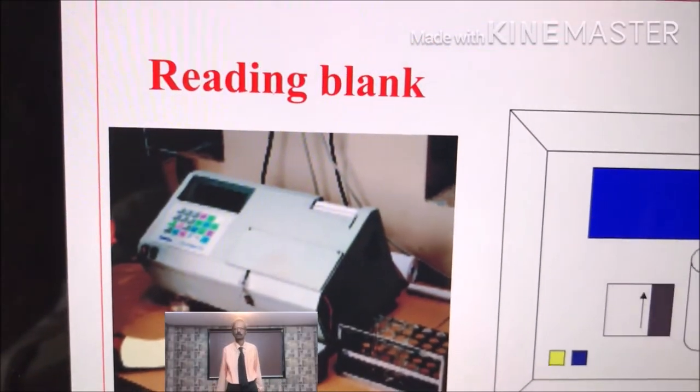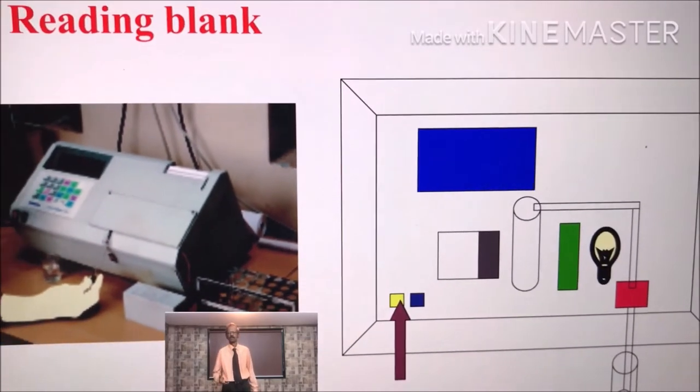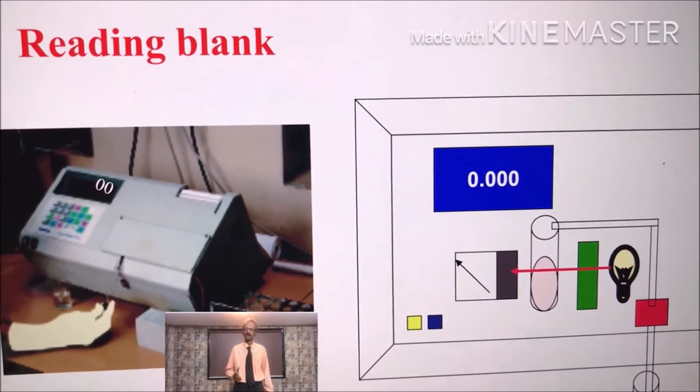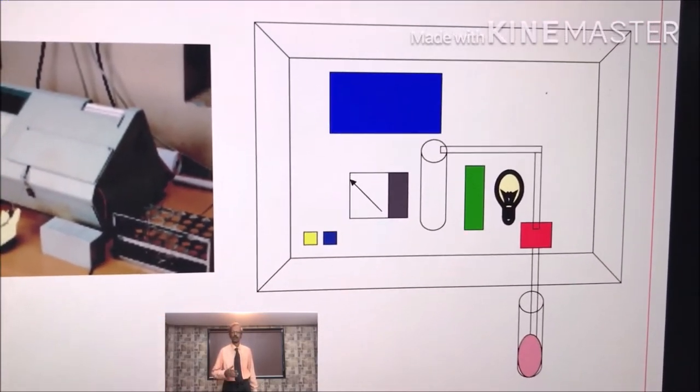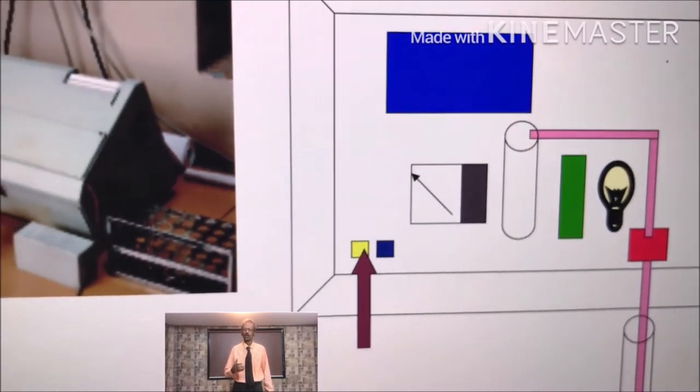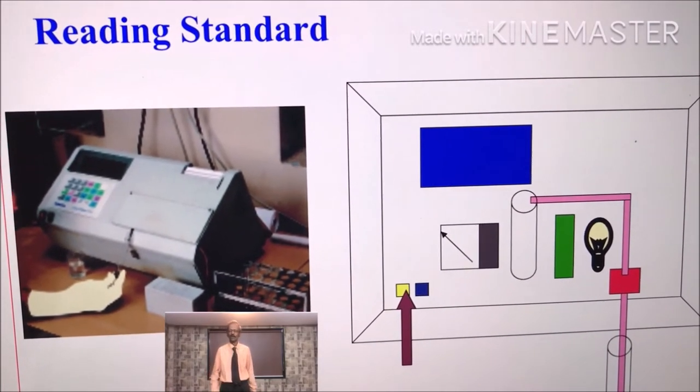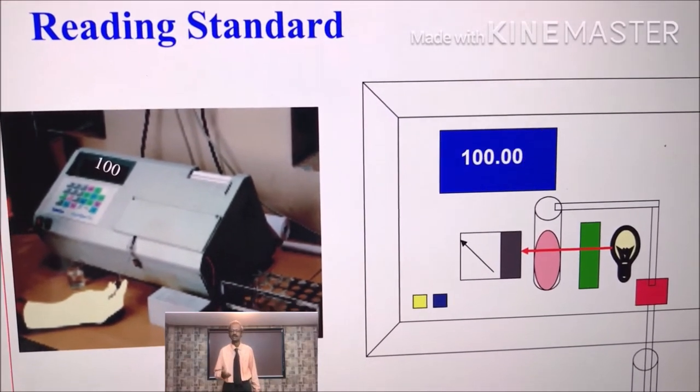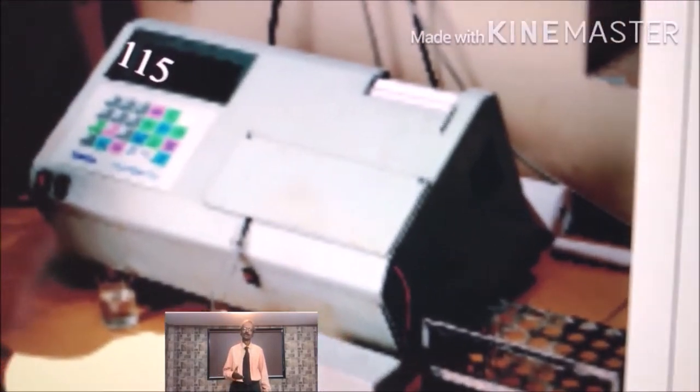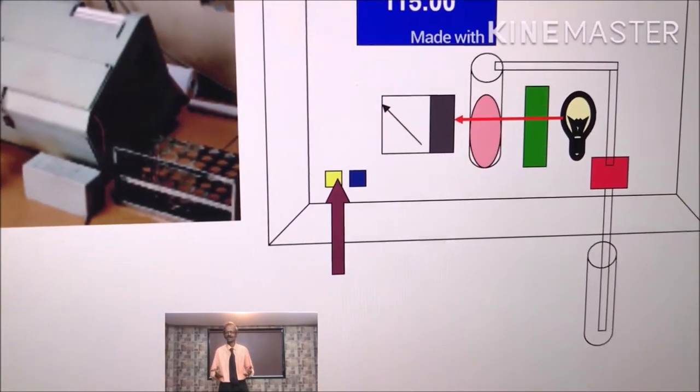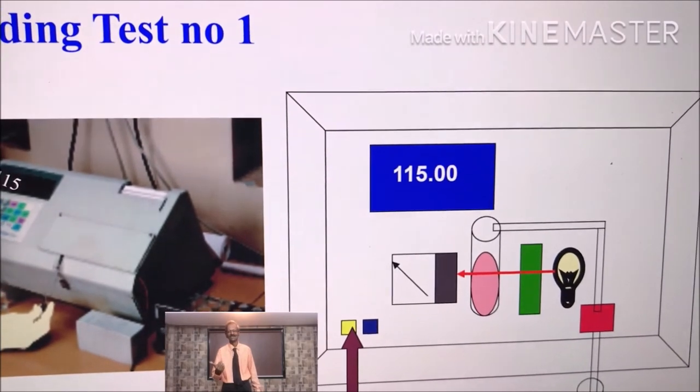For reading blank tube, hit this button. Introduce the blank and read. Now introduce standard this way and again hit this button. Just see how standard is introduced inside the thermocuvette of the analyser and recorded 100 milligrams percent. Now take reading of test one. Introduce the contents of test one to analyser by hitting this particular button and you get 150.